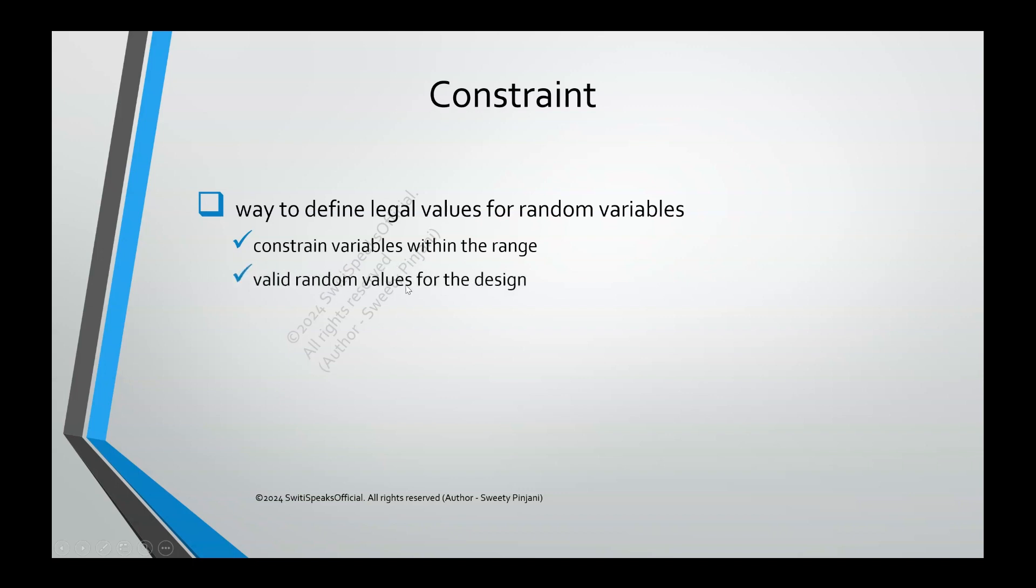Next is valid random values for the design. There can be some illegal values which you should not generate. So to avoid such values, generate only legal values. That's where your Constraint helps. Then it is much better for your verification because you want to test only within certain ranges. Only within certain limits. Only then your randomization is effective. If you don't generate legal values or if you don't generate within the required ranges, it's of no use. Your test is of no use. That's why this Constraint helps you better your verification impact.